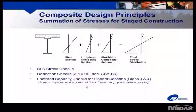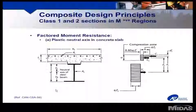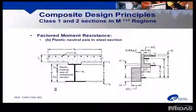However, for ultimate capacity checks, the elastic stress distribution is only used for class 3 and 4 sections where web buckling is an issue. For class 1 and 2 sections, the plastic capacity of the section can be used. This diagram shows the stress distribution when the plastic neutral axis is in the concrete slab. And this diagram shows the stress distribution when the plastic neutral axis is in the steel section.